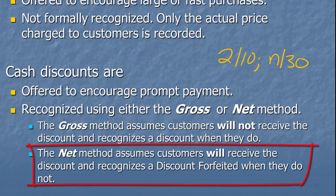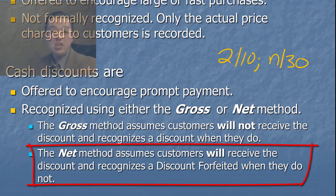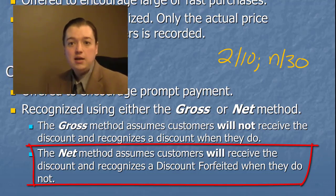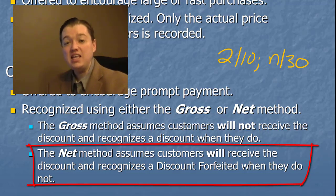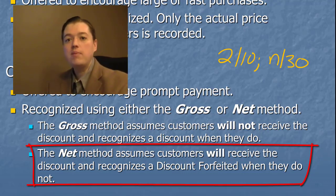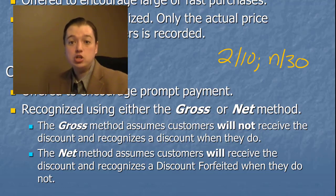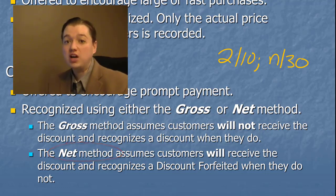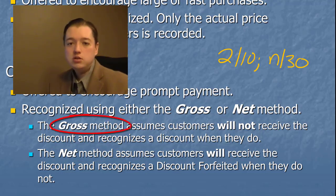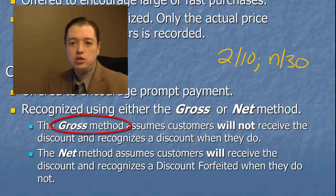If the customer pays within 10 days, we record a sales discount to show that extra 2% wasn't paid. If they don't pay early, we just get the full amount. The net method makes the opposite assumption — we assume everyone is going to get their 2% discount, so we record the initial purchase at the discounted amount. If they don't pay within 10 days, we record a discount forfeited. We choose based on what's most common: if most customers take the discount, use the net method; if most don't pay within 10 days, use the gross method.